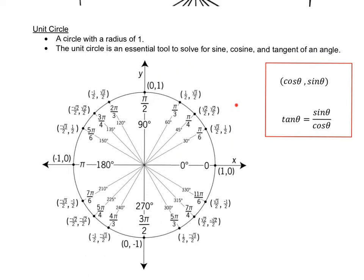In the last video, we looked at the first and second quadrants of the unit circle. The first quadrant always has positive x and y values, whereas in the second quadrant, all the x values were negative and all the y values were positive. Now we are going to look at using the first and second quadrant when it comes to evaluating trig functions.